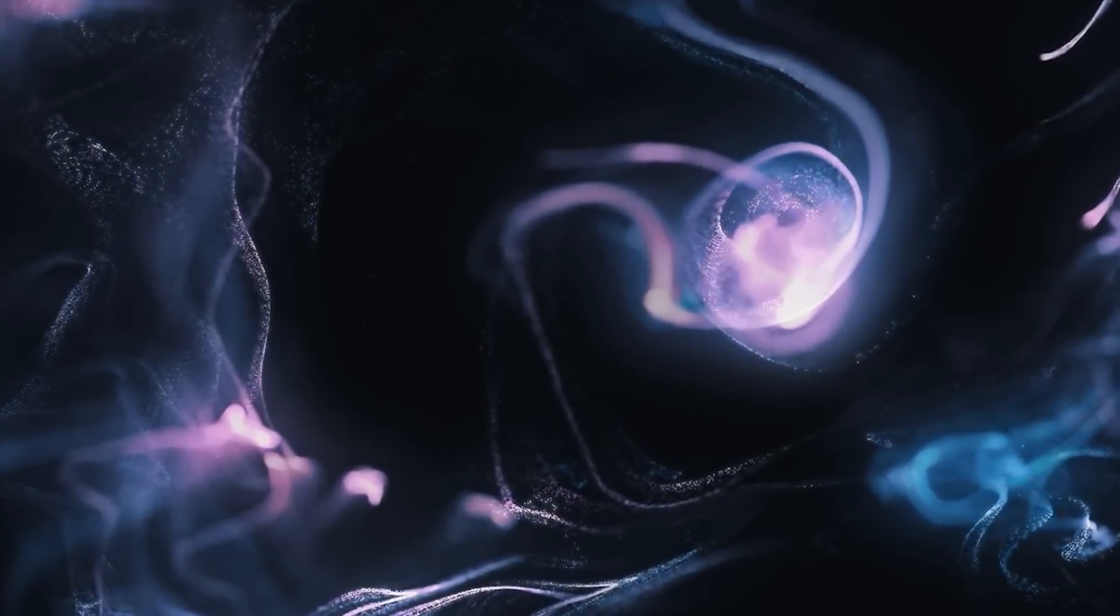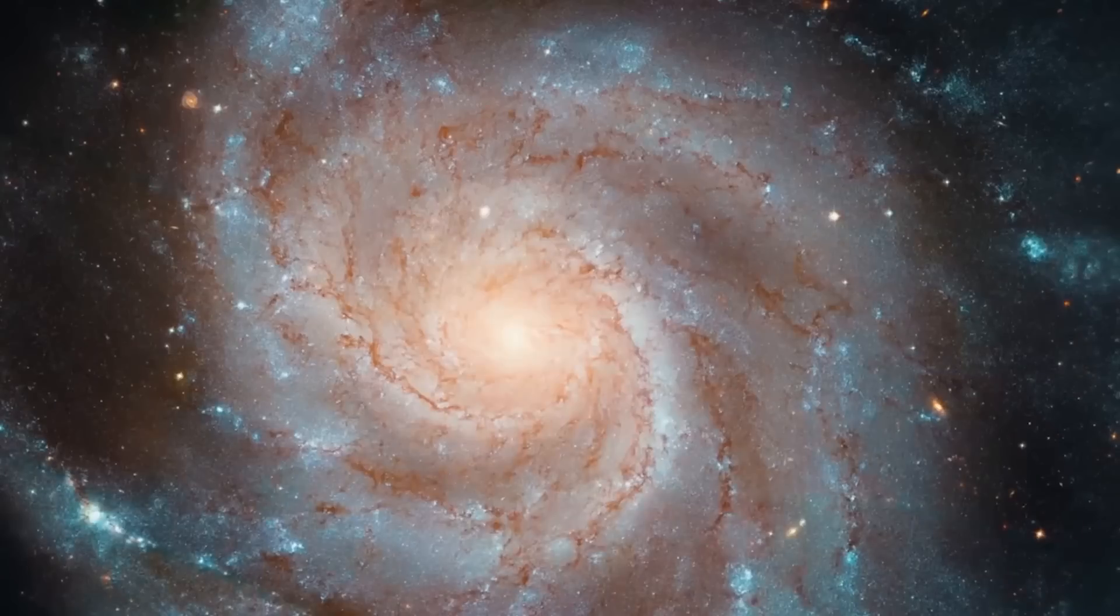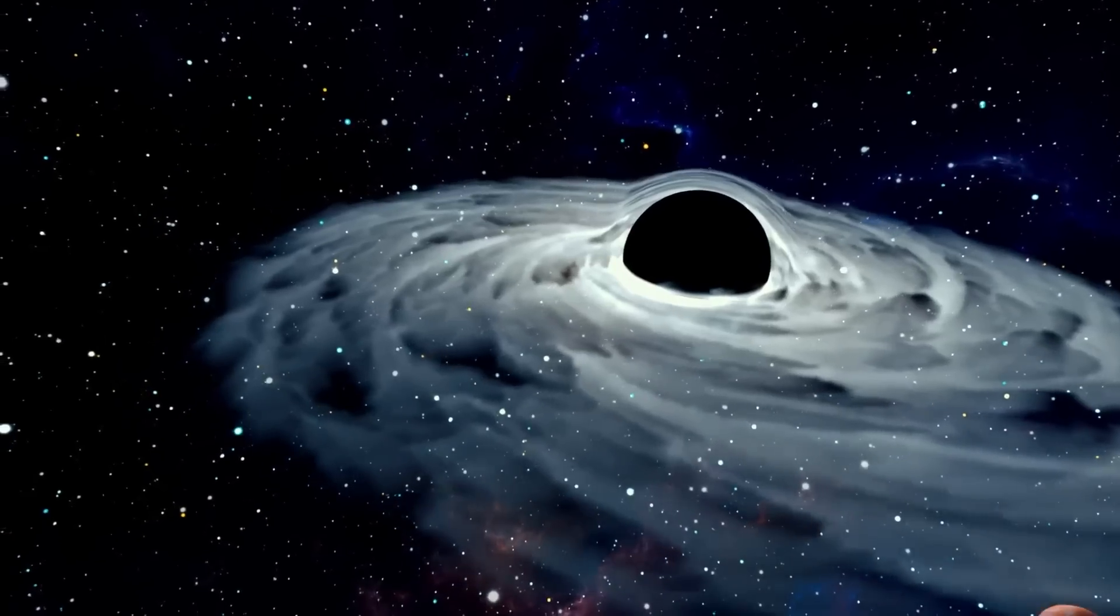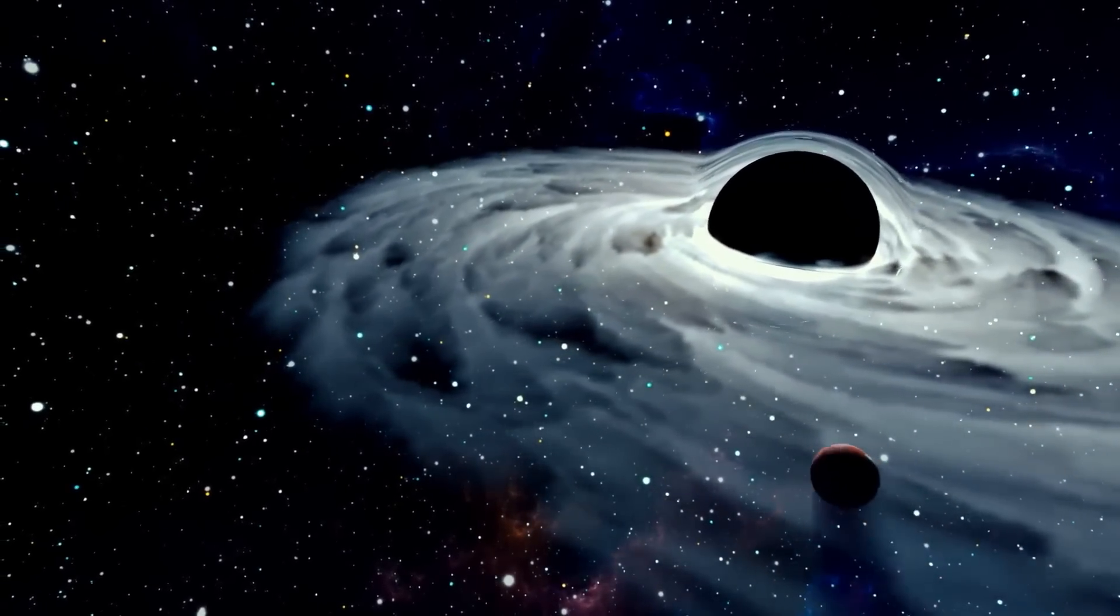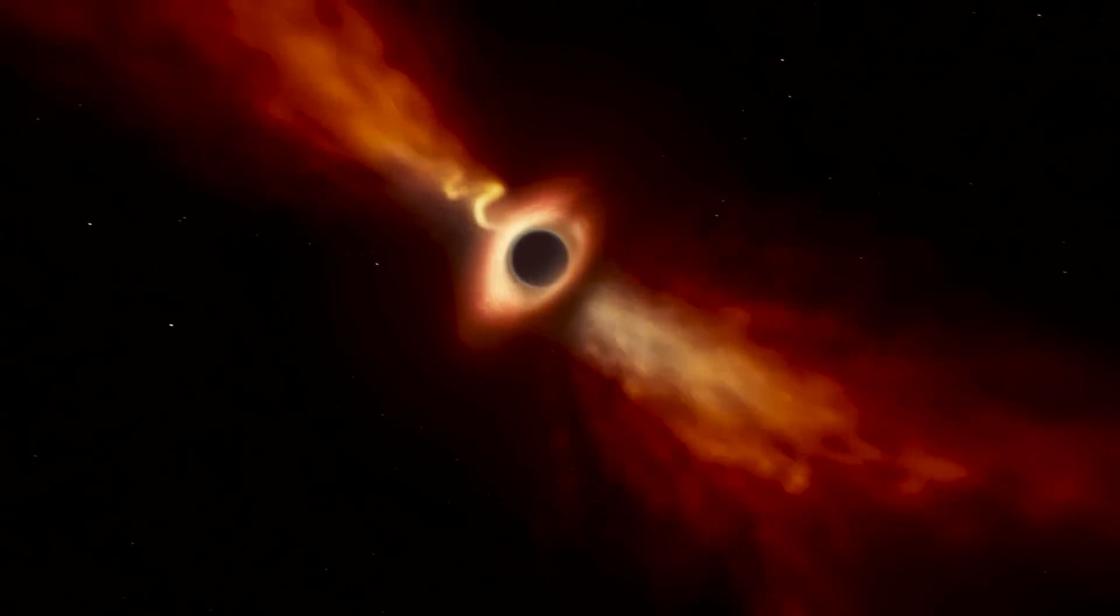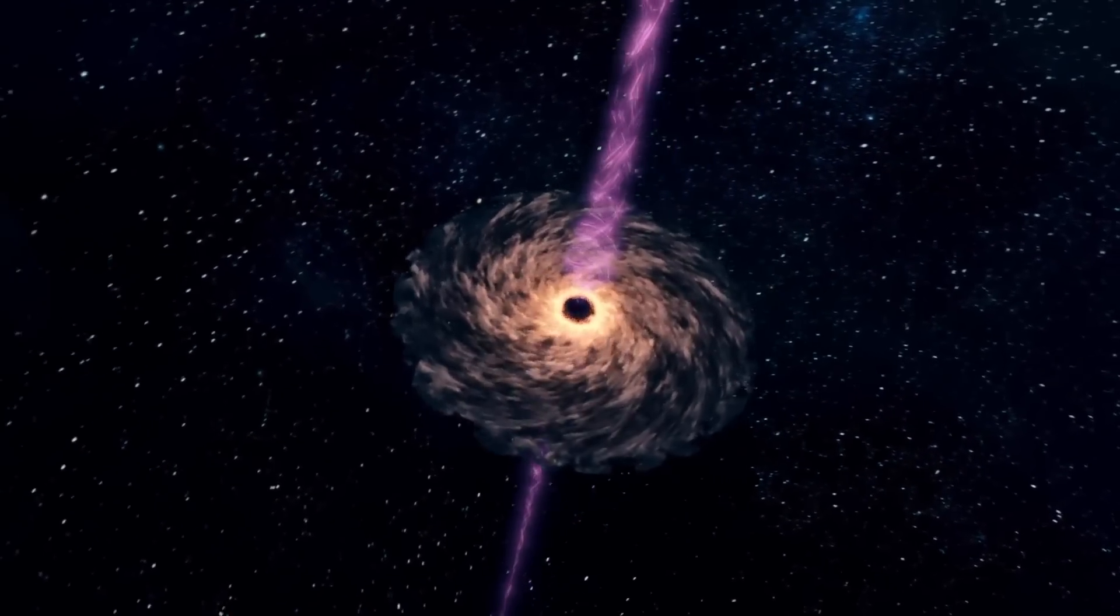Now, small, local decreases in entropy can occur as long as the universe's overall entropy is increasing. Black holes are excellent at this because they take matter low in entropy, such as planets, and disperse them across large spaces over time, increasing the chaos of space.